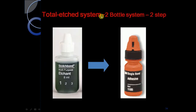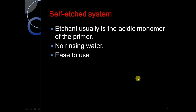The total etching 2-bottle system uses 2 steps: Scotch Bond — etching, then Single Bond adhesive. The self-etching system uses an acidic monomer as the primer for etching, and no rinsing water is required.